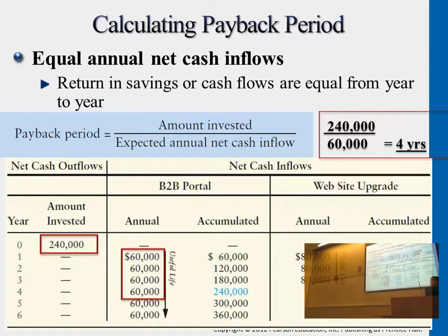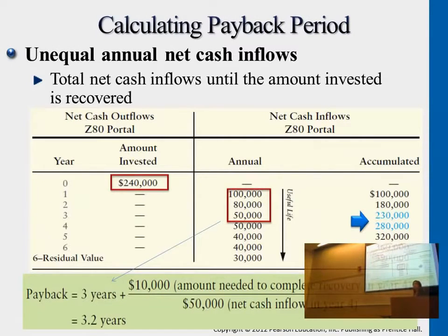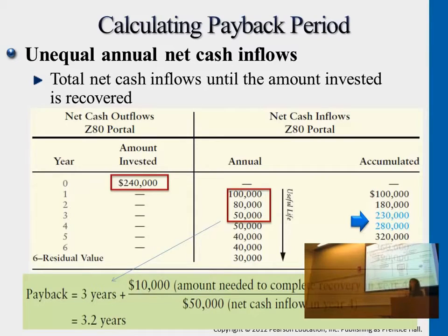This is a case where it gives you an equal time frame of return. For some machinery running on a routine basis, you may assume a certain rate of return every year that is the same. But what if machinery uses depreciation on units of production? If you heavily use it, it gives you more return, so every year the return rate is different. Assume a Z80 portal gives you: first year $100,000, second year $80,000, third year $50,000. How do you calculate the payback period?